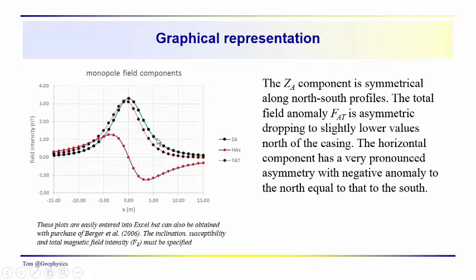So notice that for the monopole, the vertical field intensity across the anomaly is centered at zero. And it's also symmetrical. So the values to the south, this would be the south, this would be the north, should have put those in there. We end up with this symmetry here in the vertical component. The total field becomes slightly asymmetric because it's going to be the square root of the sum of the squares, z sub a squared plus h sub ax squared. So it develops a little bit of asymmetry.